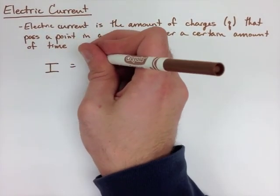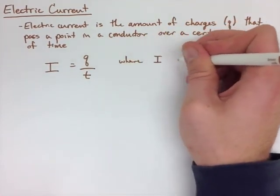We're always going to find out how much charge per time by dividing charge by time.